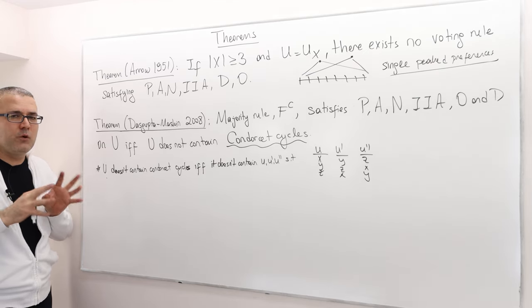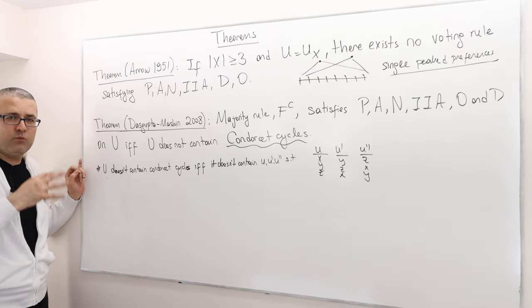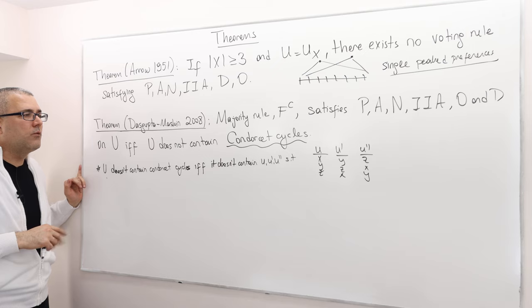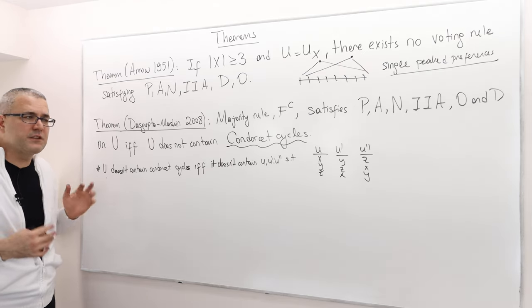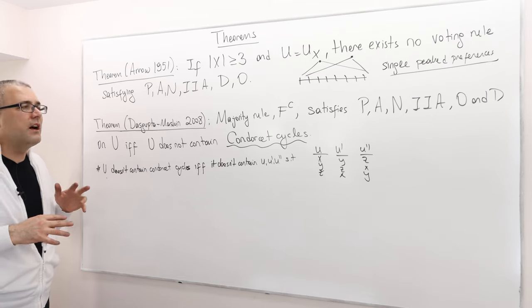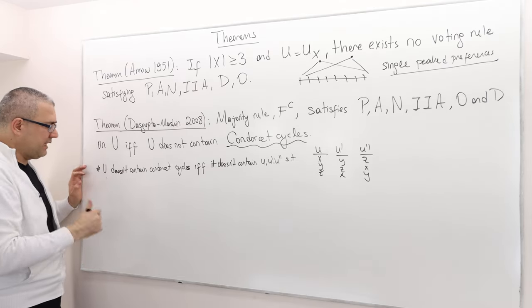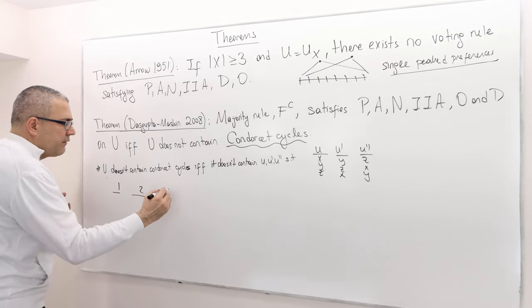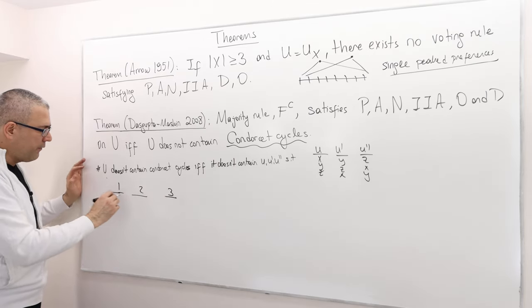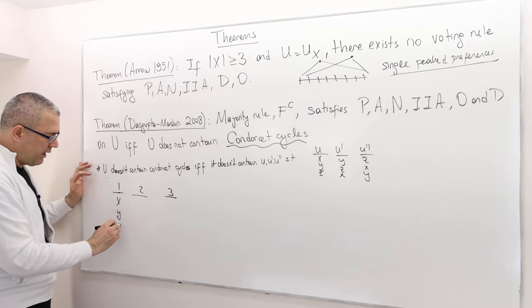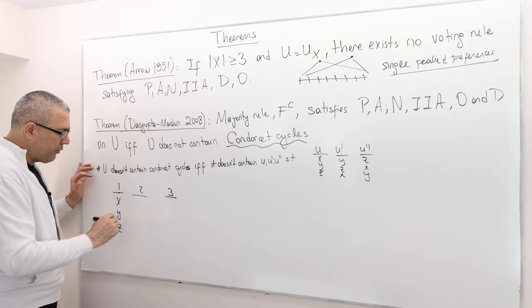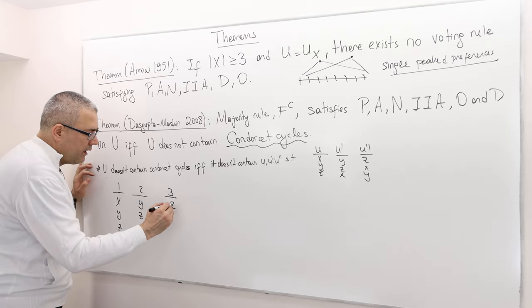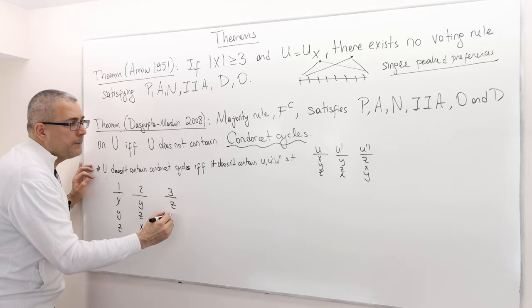But sometimes for some preference profiles the Condorcet is going to give us a cycle. Here is one example. Think of that, there are three individuals, three voters. Voter one says x is better than y, y is better than z. Voter two says y is better than z, and z is better than x. Finally, three says z is better than x, and x is better than y.